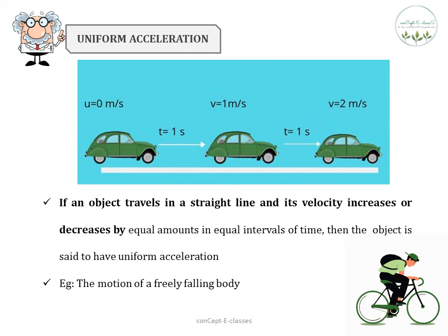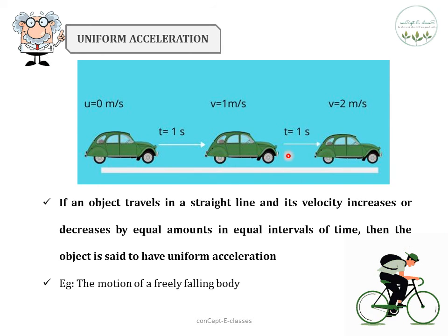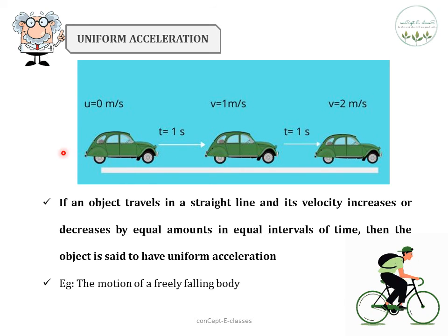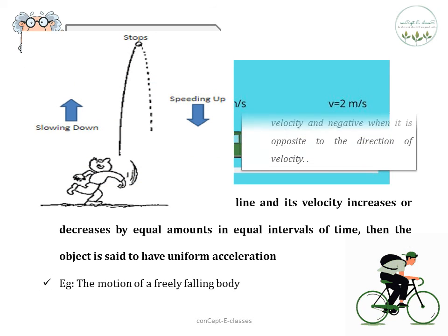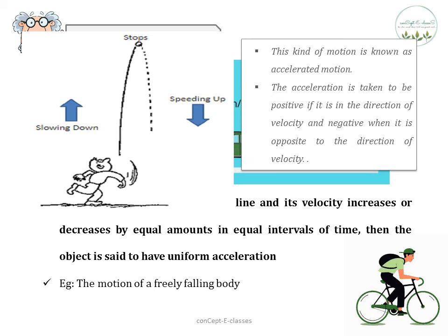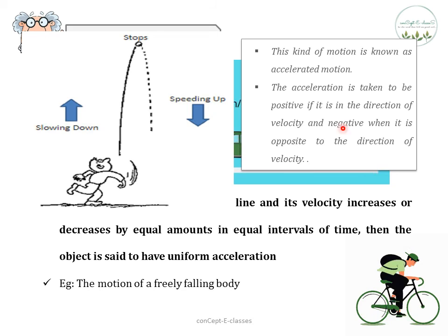Acceleration = change in velocity ÷ time taken. If the velocity of an object changes from initial value u to final value v in time t, then acceleration a = (v − u) / t. The SI unit of acceleration is meter per second squared. If an object travels in a straight line and its velocity increases or decreases by equal amounts in equal intervals of time, then the object is said to have uniform acceleration — for example, the motion of a free falling body.